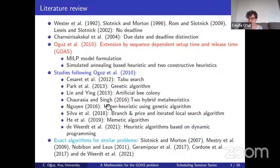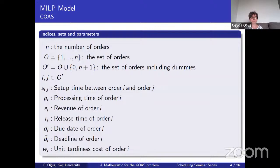For our generalized order acceptance and scheduling problem, we wanted to find an efficient and effective solution method. Given the NP-hard status of the problem, we first developed a mathematical model. Seeing that we cannot solve even medium-sized instances with the model, we propose a math heuristic algorithm that makes use of the strengths of the mathematical model together with meta-heuristics. I will now present the mathematical model we developed.